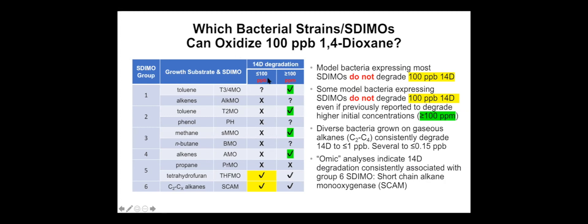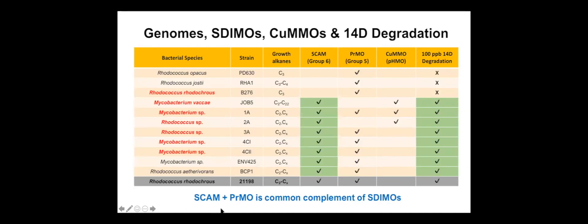Using a standardized assay with a starting concentration of 100 parts per billion, we find that only two enzyme groups can catalyze the oxidation of 1,4-D at these low, environmentally relevant concentrations: THFMO and an enzyme we're particularly interested in called short-chain alkane monooxygenase (SCAM). Several reports indicate organisms expressing other enzymes can degrade much higher concentrations — a thousand-fold higher — but we do not see that activity at these low environmentally relevant concentrations.